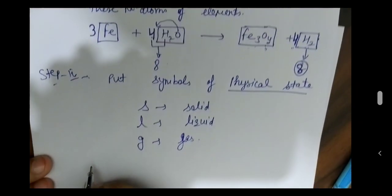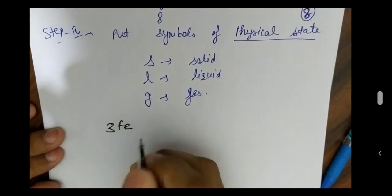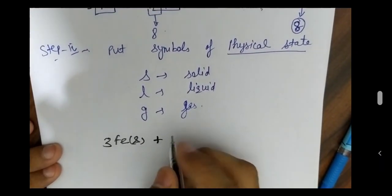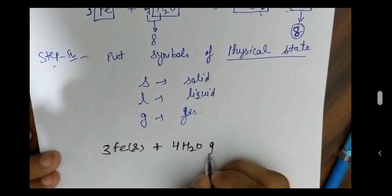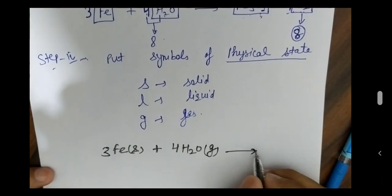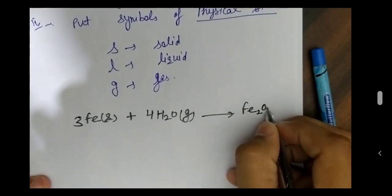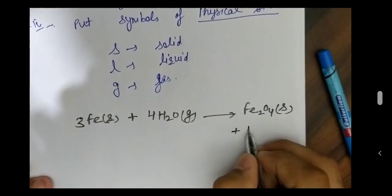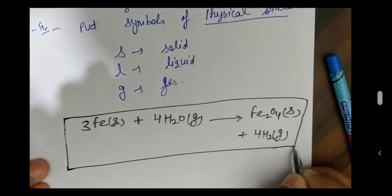Finally we write the final balanced equation with physical states. We put S for iron as it is a solid. Water is written as liquid. Iron Oxide is a solid, so we put S. Hydrogen is a gas. This is our balanced equation.